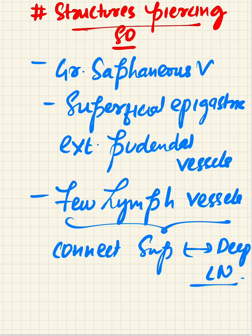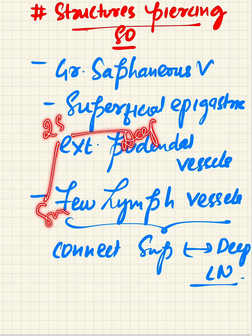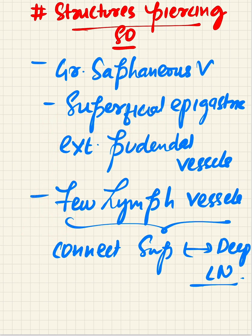The lateral margin is made up of the superficial stratum and the medial margin of the deep stratum. The saphenous opening itself is formed by the twisting of the fascia lata, which represents two strata — superficial and deep. The superficial stratum forms the inferolateral boundary, and the deeper stratum forms the medial margin.